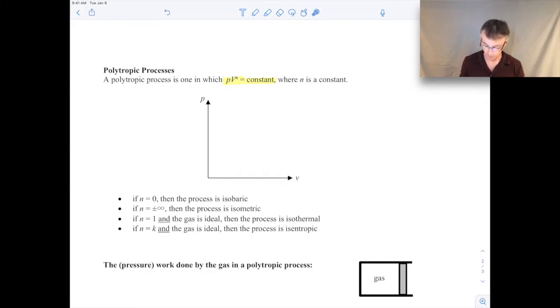Where this is the pressure, the absolute pressure. V is the volume. N is some exponent, some constant. And those multiplied together is equal to some constant.